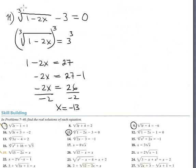When the index is odd, it is not necessary to check, because odd-index radicals allow negative values. However, I want to check at least once to make sure the answer is correct.